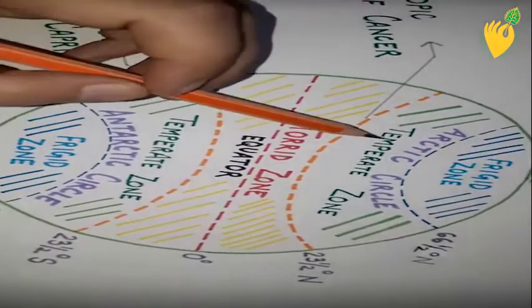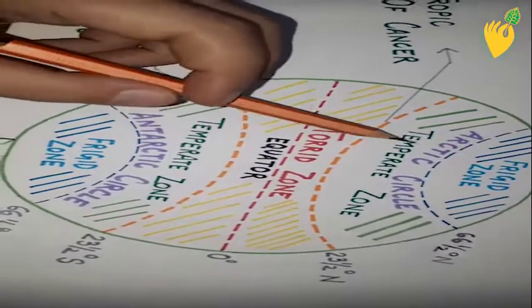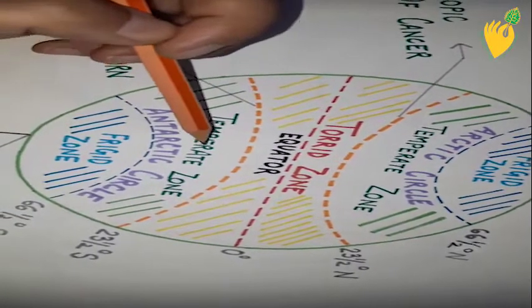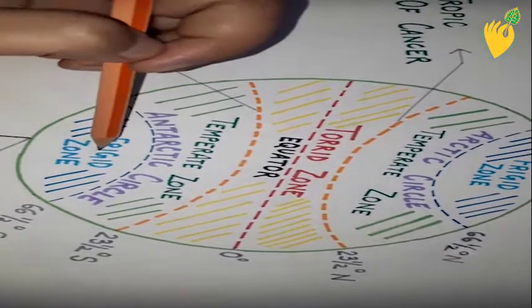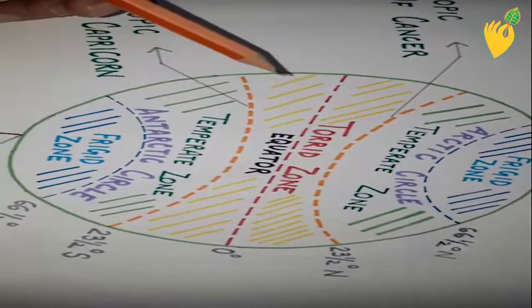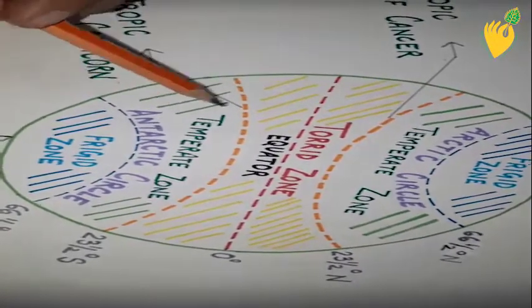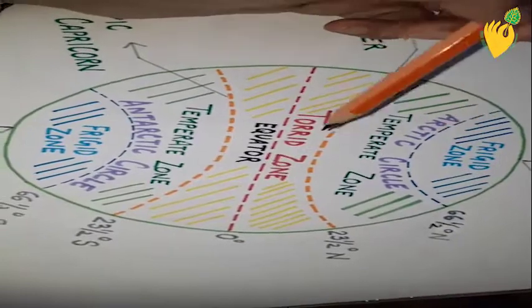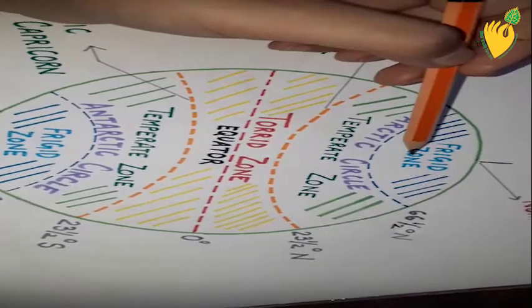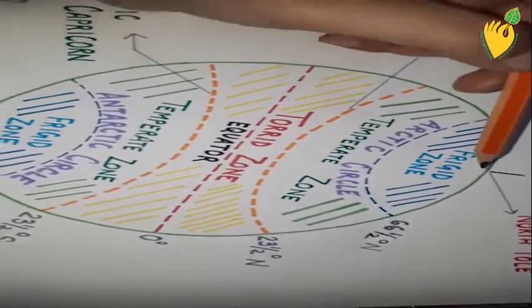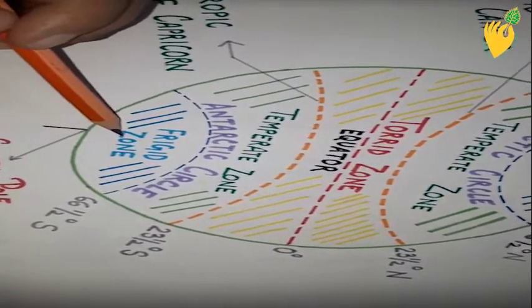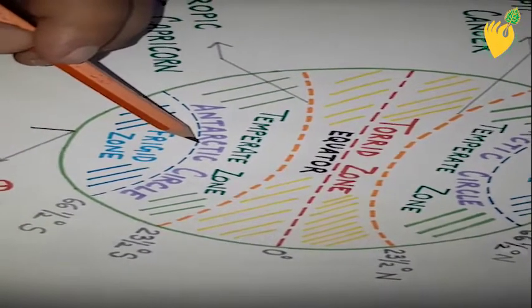The temperate zone lies in both the northern and southern hemispheres, between the frigid zone and the torrid zone. It receives a balanced amount of sunlight, making the region neither too hot nor too cold. The frigid zone also lies in both hemispheres — in the northern hemisphere it lies between the north pole and the Arctic Circle, and in the southern hemisphere between the south pole and the Antarctic Circle.